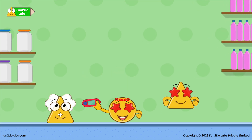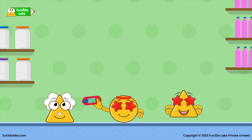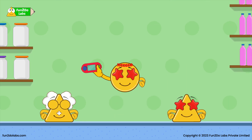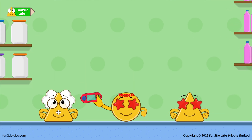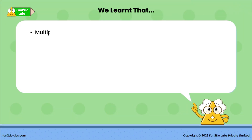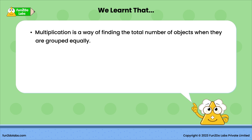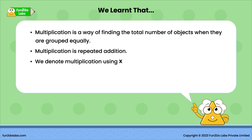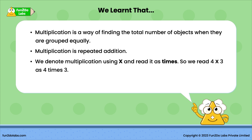Treeho and Sarah play with Mr. Multiply for some more time and have some fun. Uncle Math is proud of his students. We learned that multiplication is a way of finding the total number of objects when they are grouped equally. Multiplication is repeated addition. We denote multiplication using this symbol and read it as times. So we read this as four times three. The answer of the multiplication is called a product.